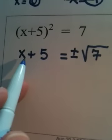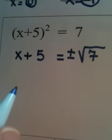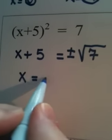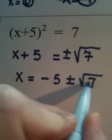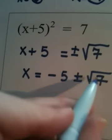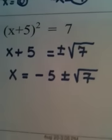And in order to get x alone here, I have to get rid of a positive 5. So we're going to subtract 5 from both sides, leaving me with x equals a negative 5 plus or minus the square root of 7. And I very intentionally put the negative 5 before the radical expression, just because that's traditionally the way it's done.